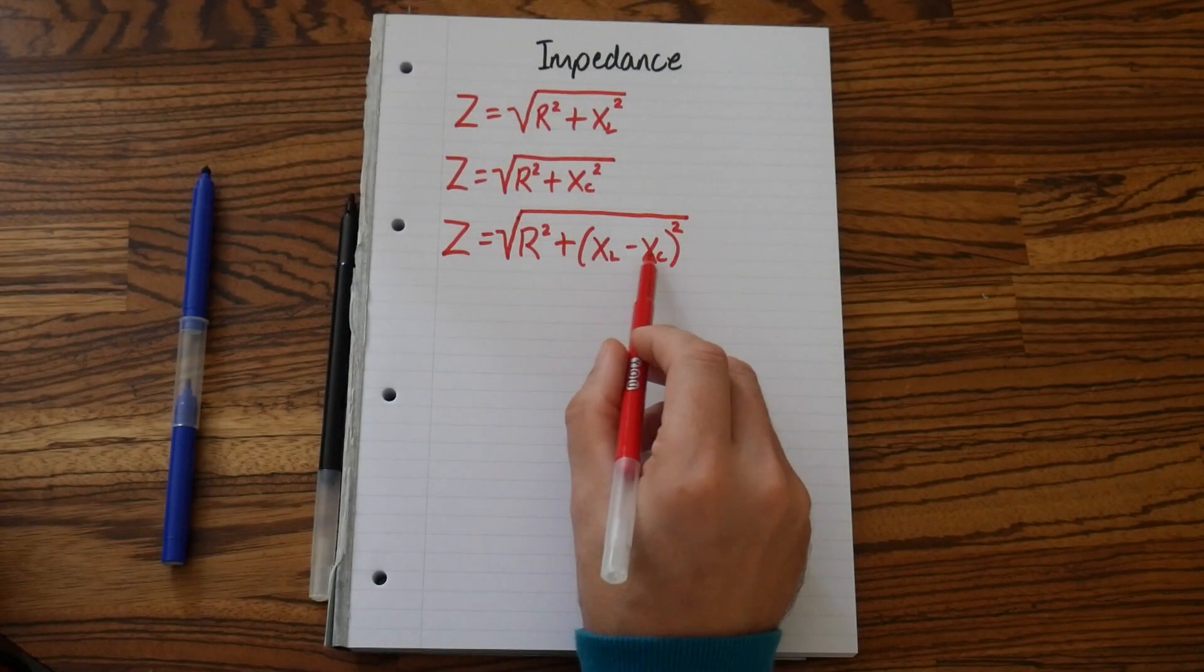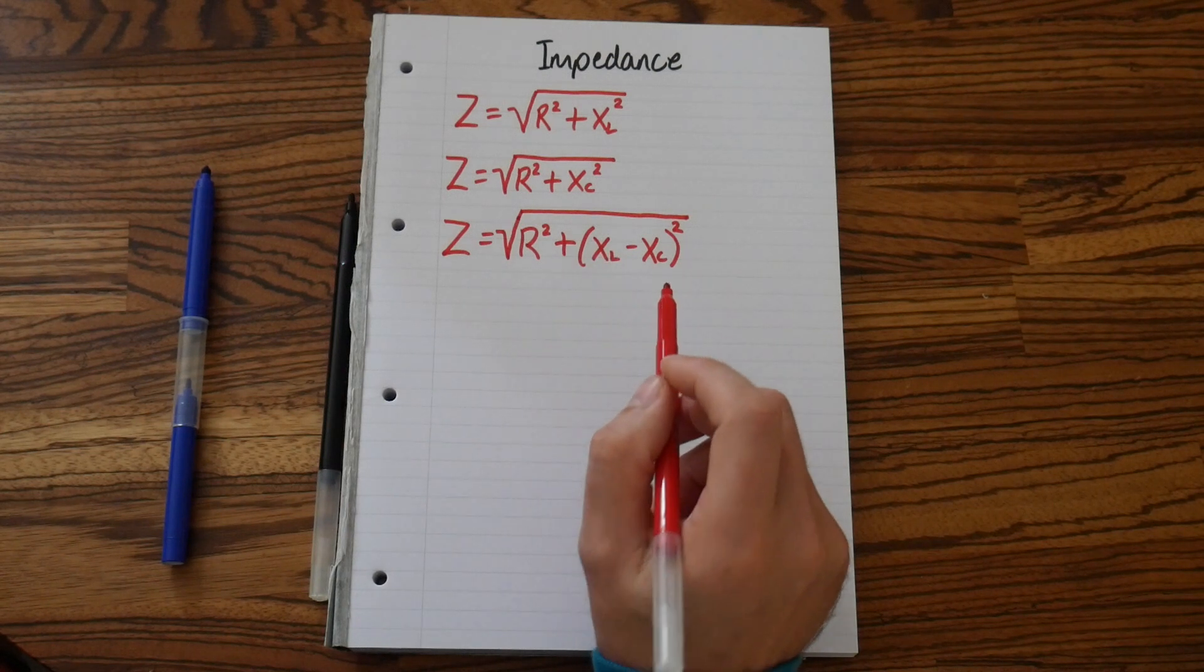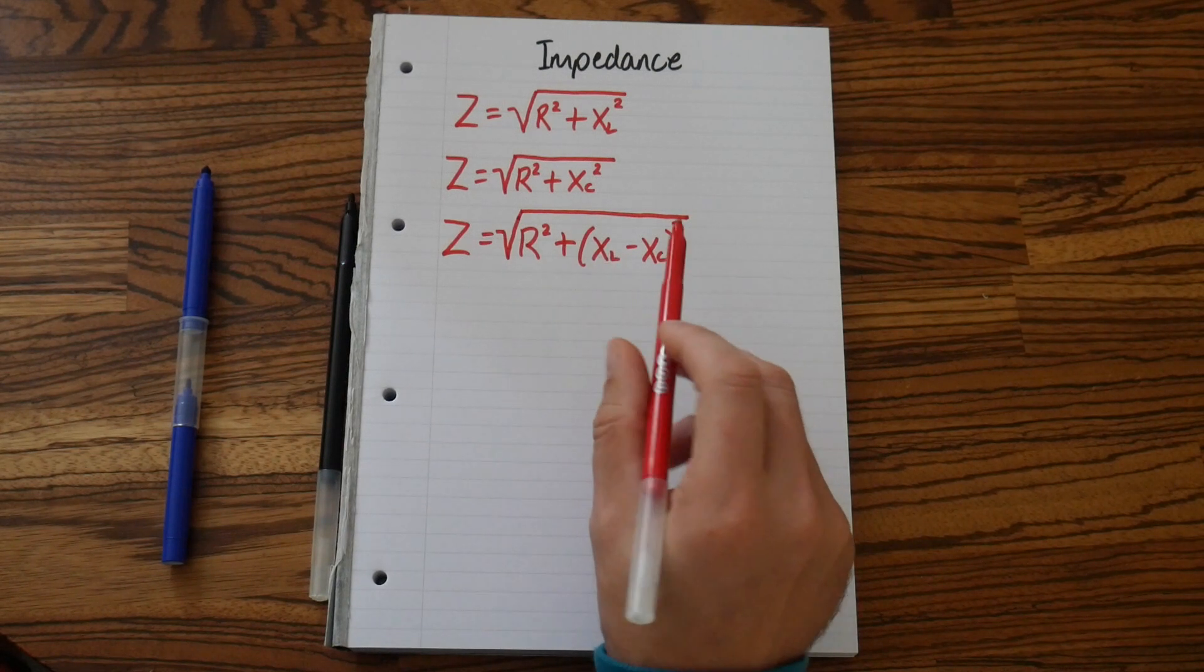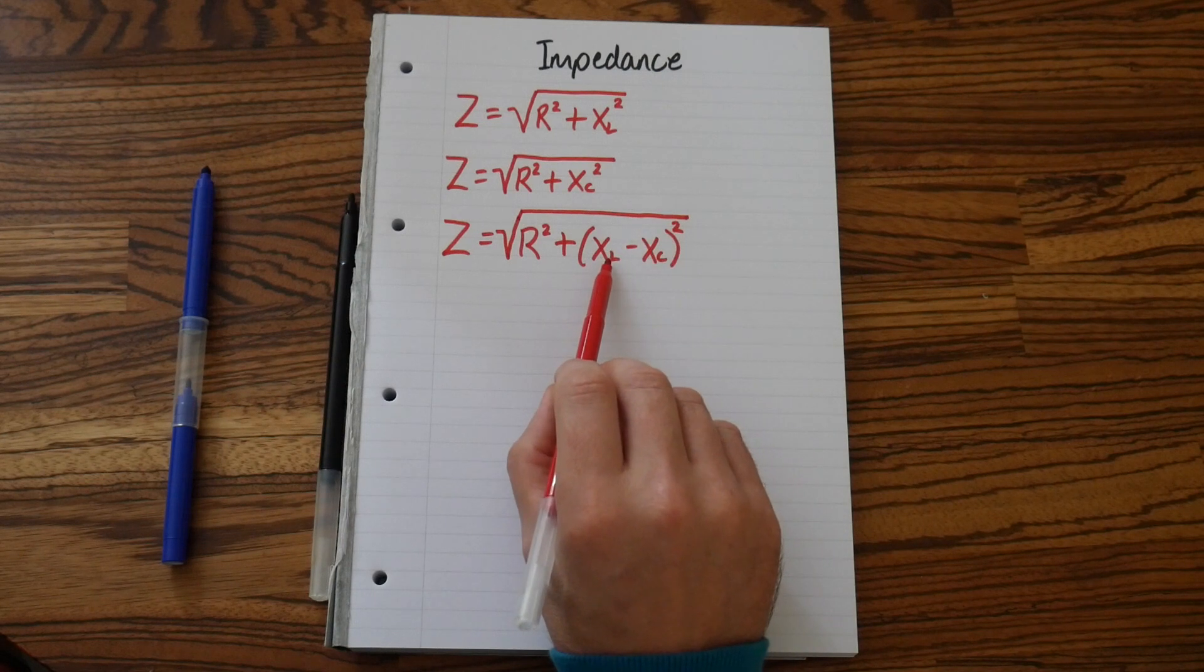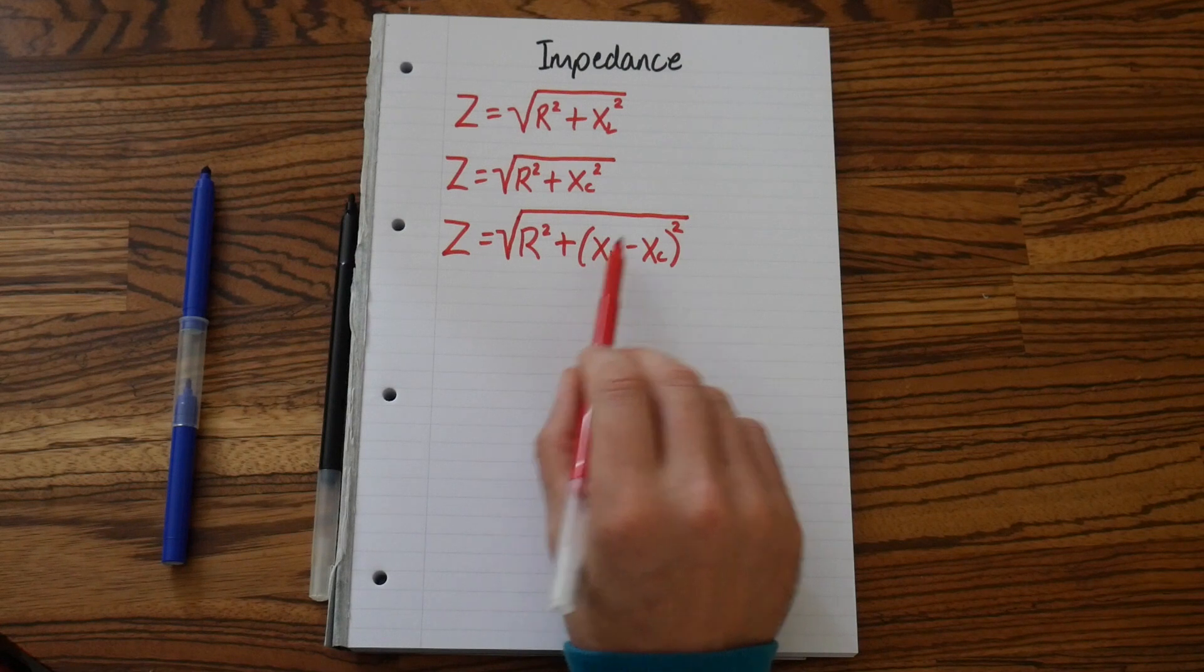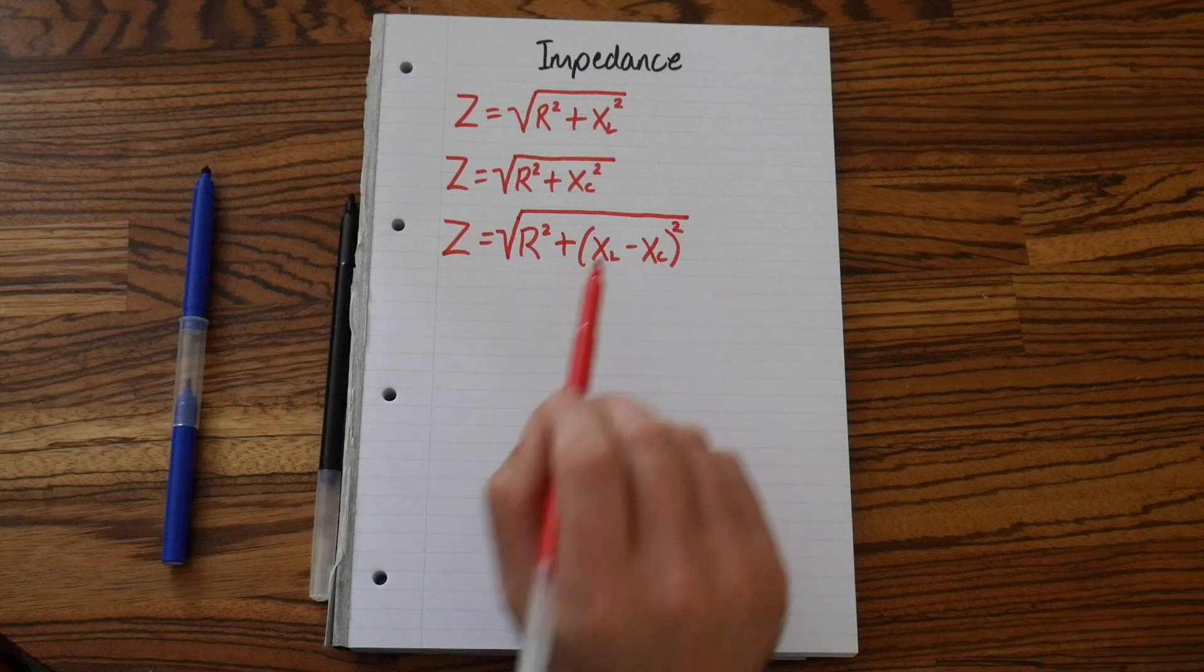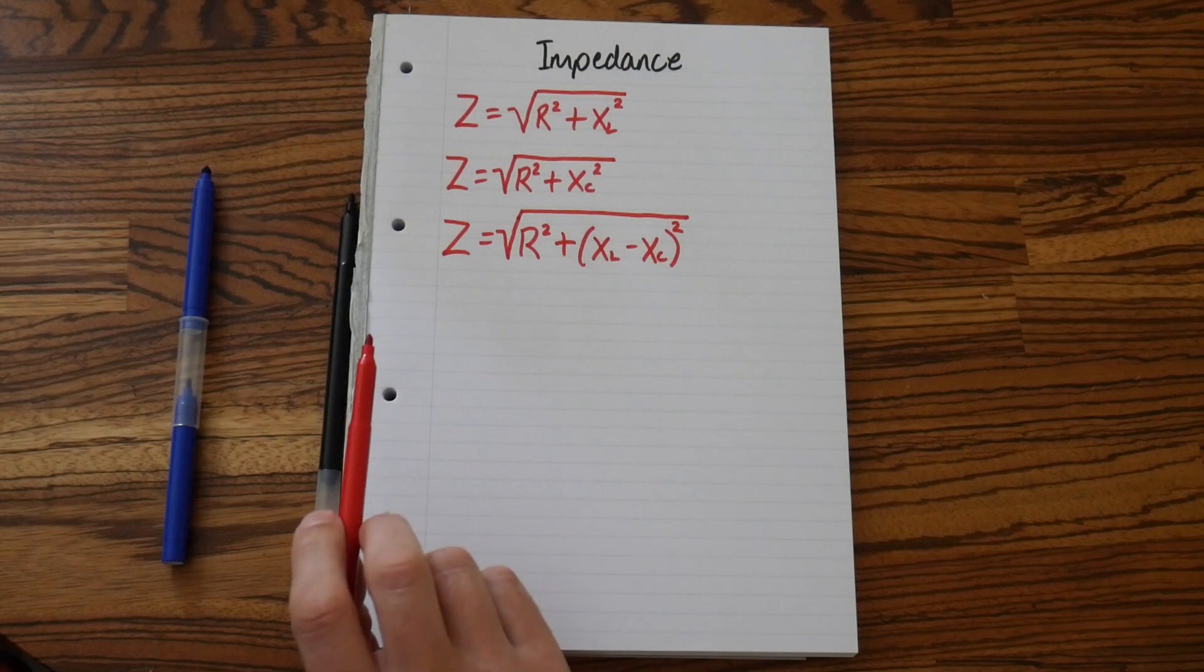Now, you don't need to worry about which way round the XL or XC goes. If you subtract XC from XL and you end up with a minus number, we then square a minus number, it becomes a positive number. So the way round these two go doesn't make any difference.